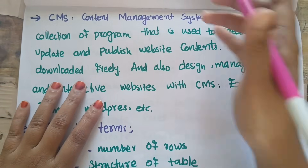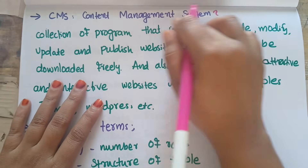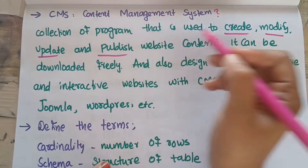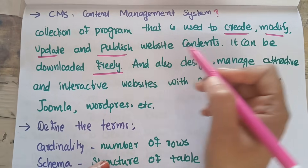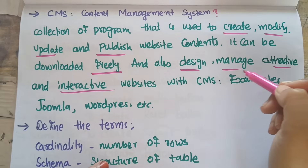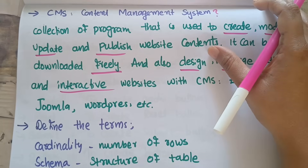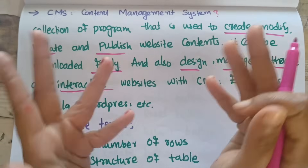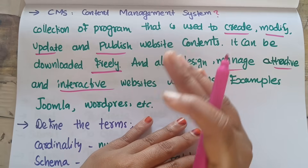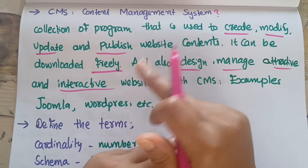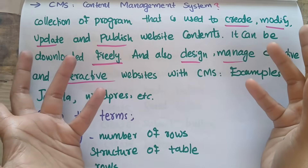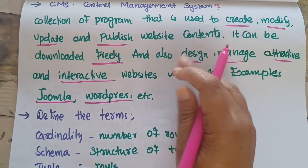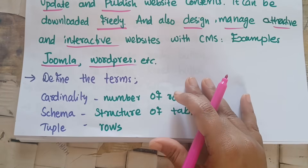The next two-mark question: What do you mean by CMS? CMS stands for Content Management System. It is a collection of programs used to create, modify, update, and publish website contents. It can be downloaded freely and is used to design, manage, and create attractive and interactive websites. Examples include WordPress, Joomla, etc.